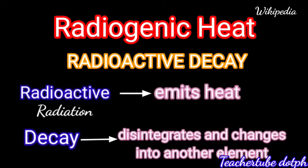Alright, the next source of heat is called radiogenic heat. It is actually the radioactivity of some elements found in the Earth's crust. Radiogenic heat is just the heat produced during radioactive decay.